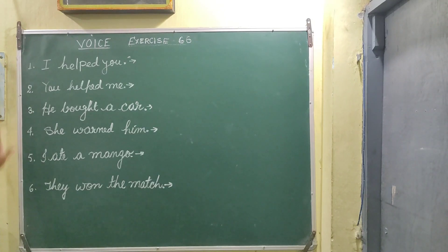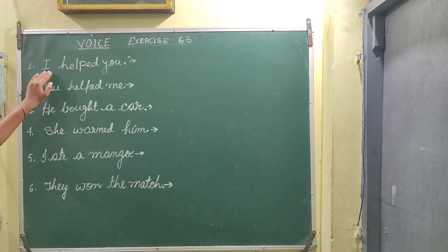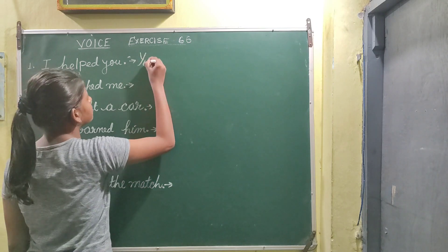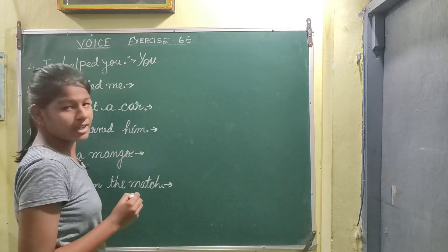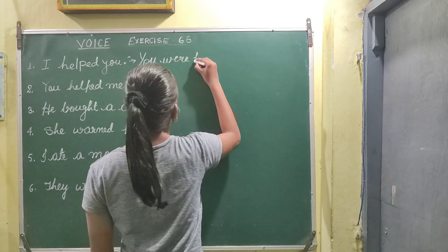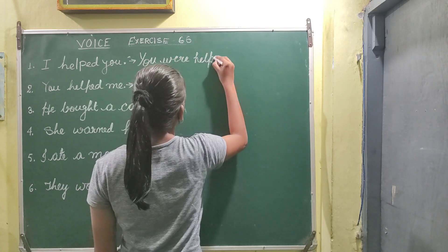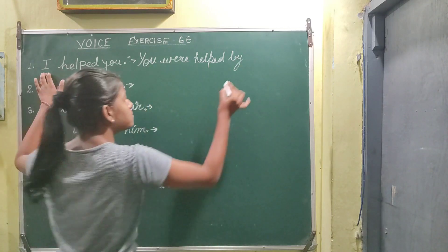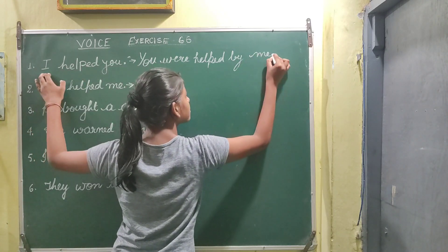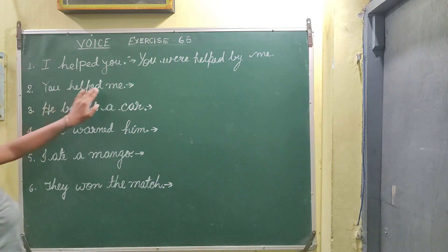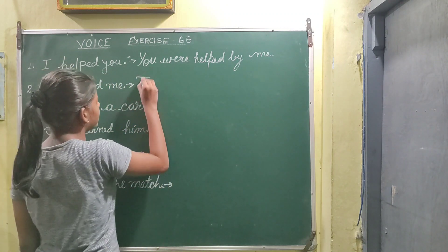I have written questions one to six. Let's see the transformation of these sentences. The first is 'I helped you.' So first we will say 'you' — what is with 'you'? 'Were'. So: 'You were helped by me.'